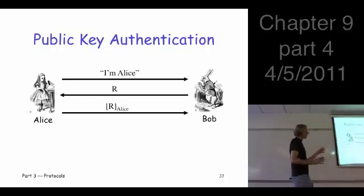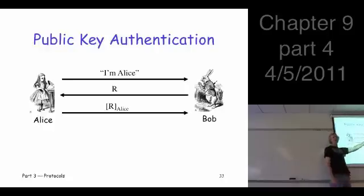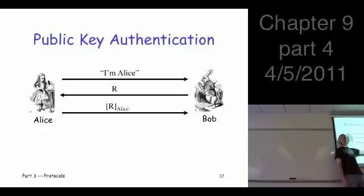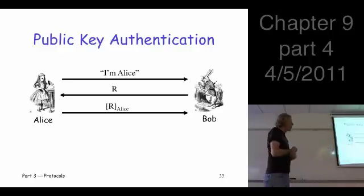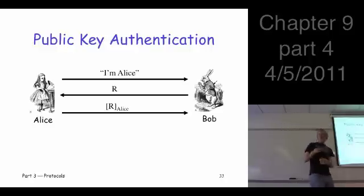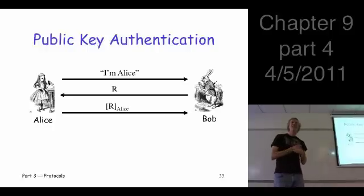So from Alice's perspective, this is exactly the same protocol. She takes whatever shows up, she applies her private key to it and sends the result, right? From Bob's perspective, it's a little bit different. Where does he use the public key? Is he using here or here? But basically the same protocol.